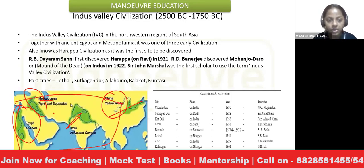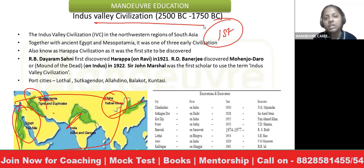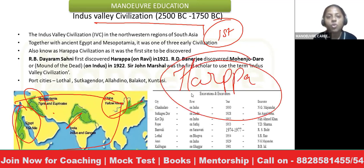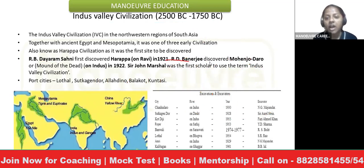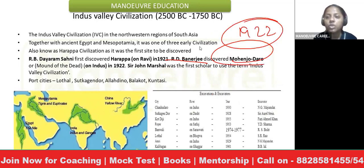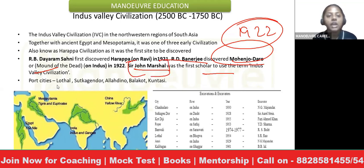The very first site to be discovered in the Indus Valley Civilization was Harappa, and hence it is also called the Harappan Civilization. Being the first site discovered, it was discovered by Dayaram Sahani in 1921. After that, RD Banerji discovered Mohenjo-daro in 1922, the very next year. Sir John Marshall was the first scholar to use the term 'IVC' (Indus Valley Civilization).